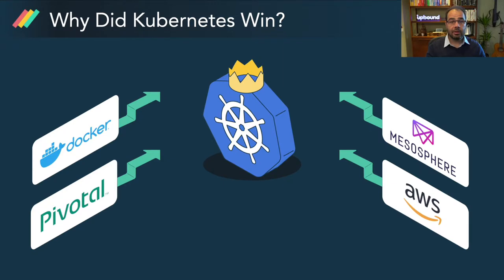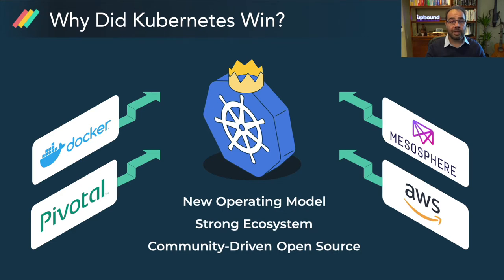This was the year that Kubernetes won the container orchestration wars. While Kubernetes is known for being the gold standard in container orchestration, I don't believe managing containers is its true superpower, nor do I believe it's the primary reason that it won. I believe Kubernetes won because it defined a new operating model for managing applications and infrastructure, and it did so with a strong ecosystem and a community-driven approach to open source.